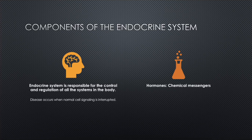The components of the endocrine system are the hypothalamus, the pineal gland, pituitary gland, thyroid gland, thymus gland, parathyroid gland, and adrenal glands. There are also organs that are part of the endocrine system, such as the pancreas and the gonads.